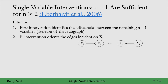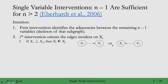Intervening on xi tells us which of these two cases we're in. After we intervene on xi, if we find that xi and xj are independent, then we know there's an edge from xj to xi. Consider the alternative — if we intervene on xi and there's still an edge to xj, then xi and xj would be dependent by minimality. That's a contradiction, so by proof by contradiction, if xi and xj are independent, then xj points into xi.